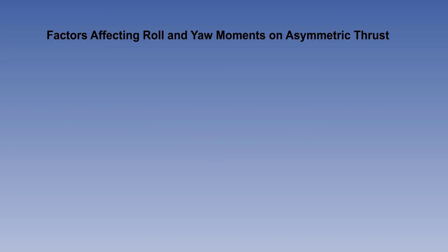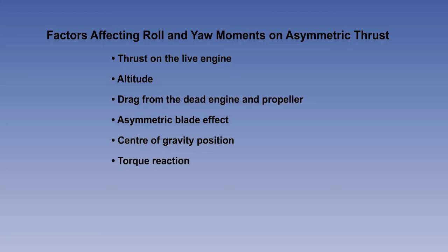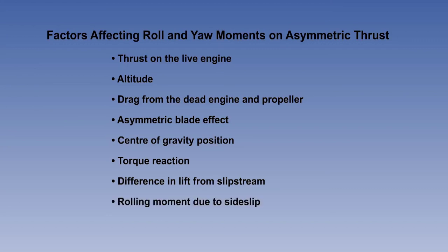We can summarize the factors affecting the roll and yaw moments when on asymmetric thrust as follows: thrust on the live engine; altitude; drag from the dead engine and propeller; asymmetric blade effect; center of gravity position; torque reaction; difference in lift from slipstream; rolling moment due to sideslip; weight; and finally, the vital element of IAS, which determines the amount of control the pilot has over the aircraft.